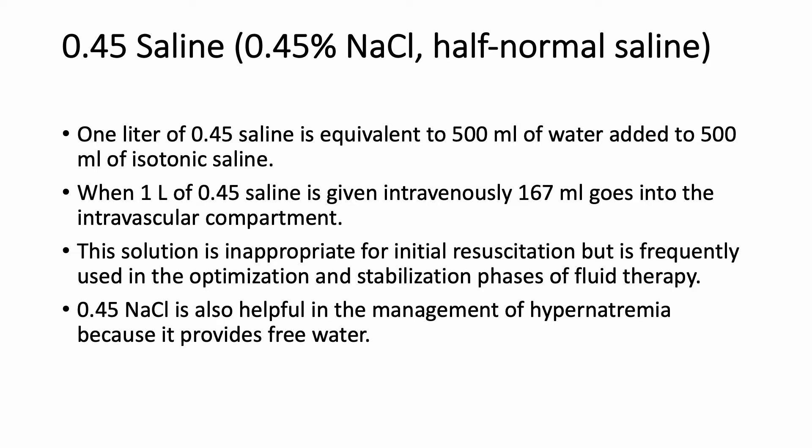Using D5 half-normal saline helps prevent hypoglycemia because of the dextrose, and with the half-normal saline component, you prevent hyperchloremic non-anion gap acidosis and hypernatremia. It can also be useful in managing hypernatremia, especially if not severe, since half of it is free water. For severe hypernatremia, you would use 5% dextrose in water instead.